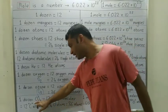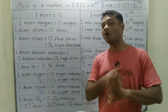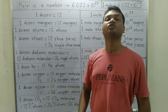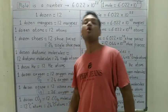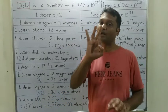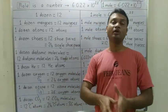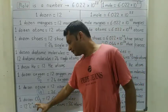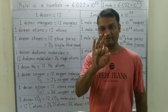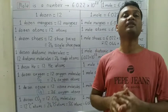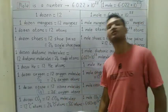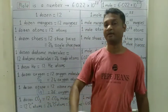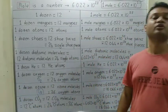Total number of atoms in one carbon dioxide molecule: 1 carbon atom plus 2 oxygen atoms = 3 atoms total. So 1 dozen carbon dioxide = 12 into 3 = 36 atoms total. Similarly, 1 mole carbon dioxide = 6.022 into 10 raise to 23 carbon dioxide molecules.